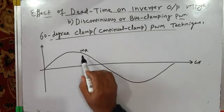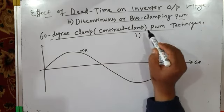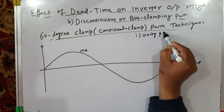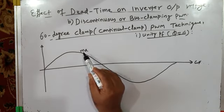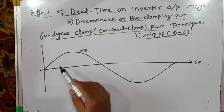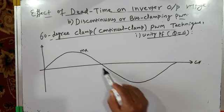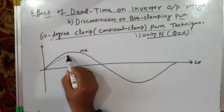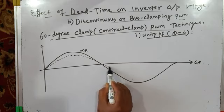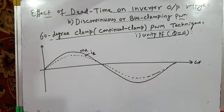Let us first consider unity power factor, meaning phi equals zero degrees, so current is in phase with the voltage. This is the original sinusoidal modulating wave MR, and at unity power factor, current IR is in phase with pole voltage VRO. We have to clamp phase R to positive DC bus from 60 to 120 degrees, and to negative DC bus from 240 to 300 degrees.